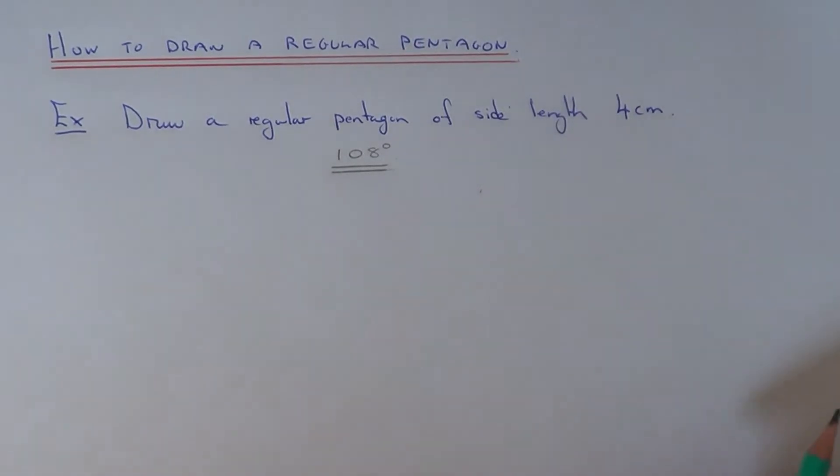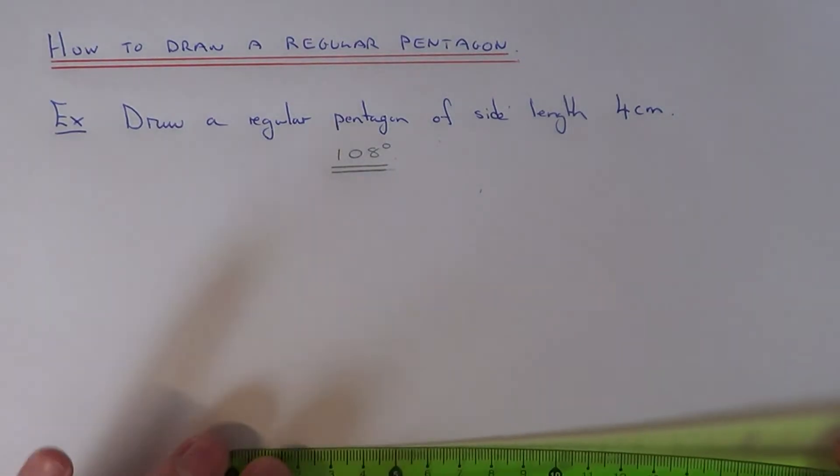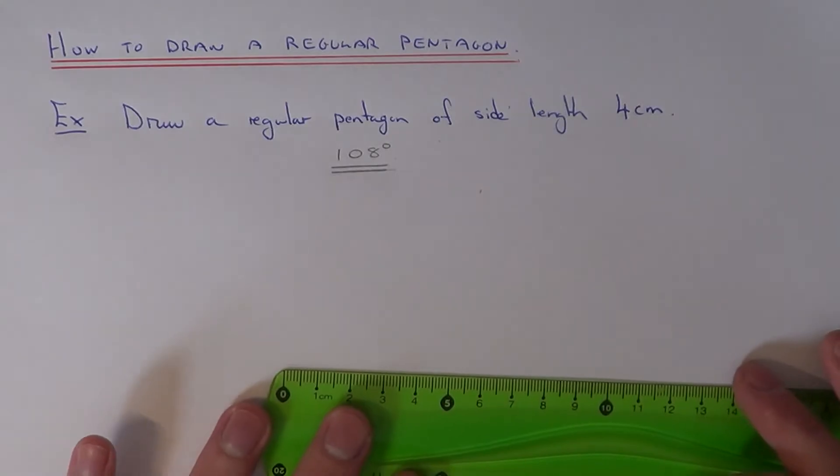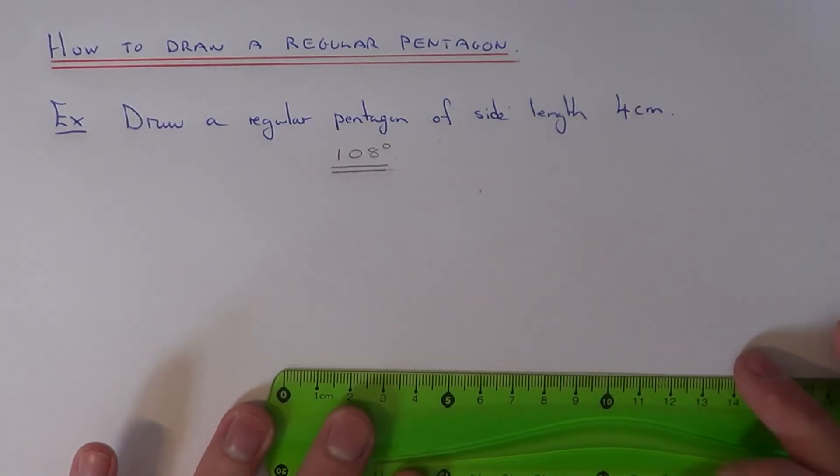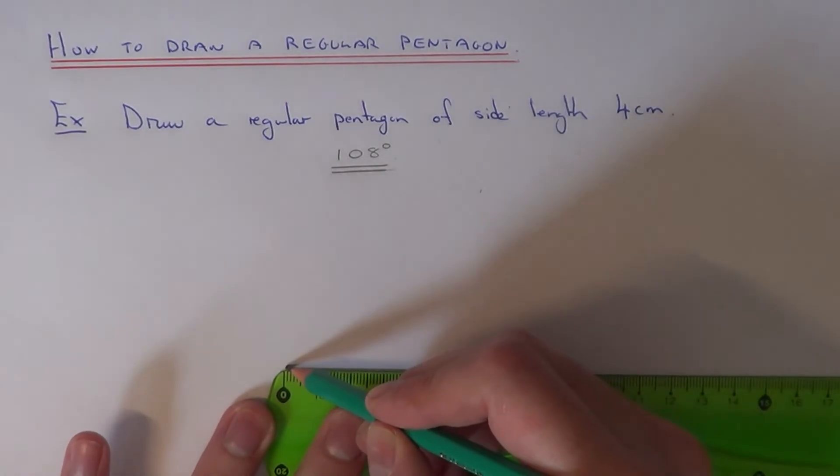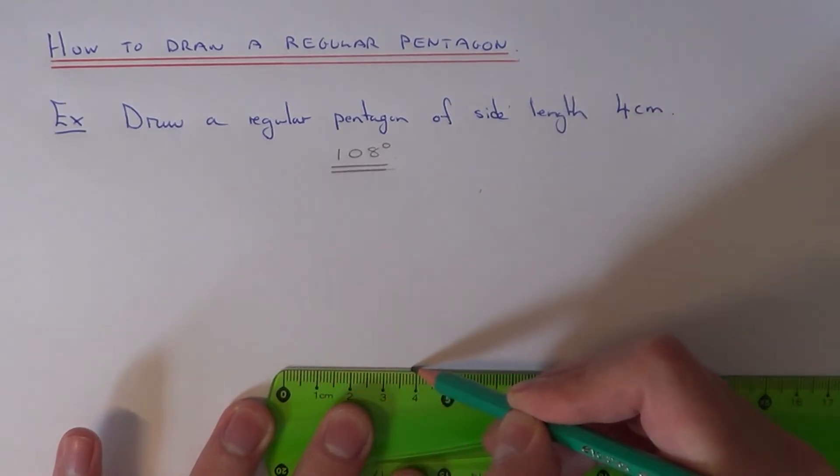So we need to draw a regular pentagon of side length of four centimetres. So all the sides need to be four centimetres long. So first of all then, get your ruler and you can draw your first edge of your regular pentagon which is four centimetres.